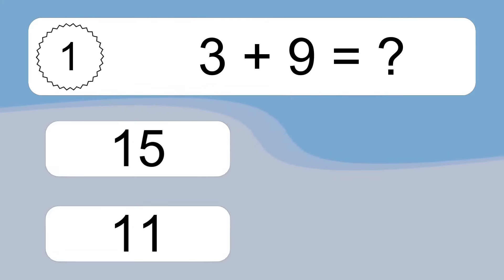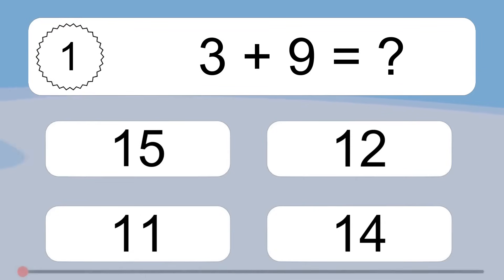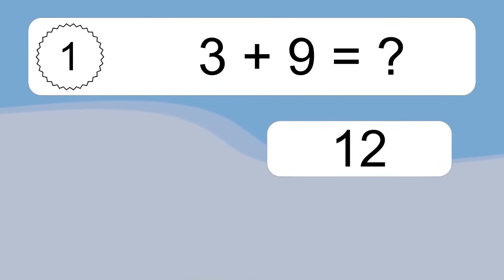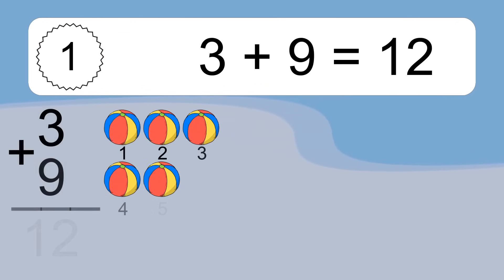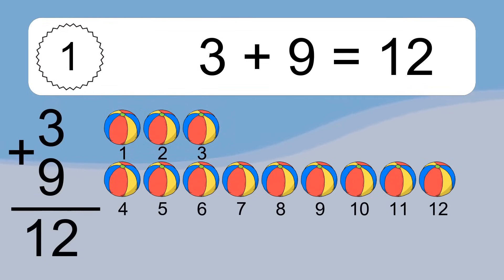3 plus 9 equals what? 3 plus 9 equals 12. Let's count it: 1, 2, 3, 4, 5, 6, 7, 8, 9, 10, 11, 12.